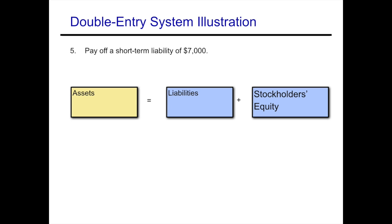Example five: pay off a short-term liability of $7,000. We're paying off this short-term liability, so our cash is decreasing — that's an asset — and we're paying off some of our debt, so our liabilities are also decreasing.